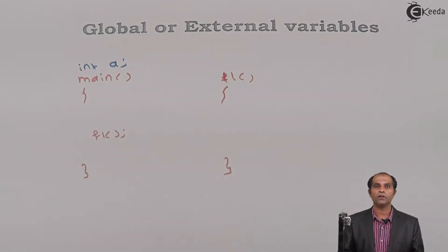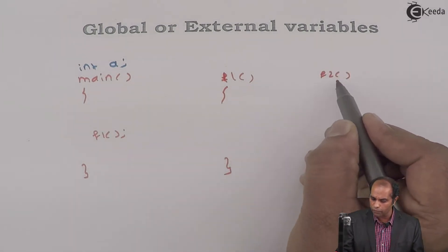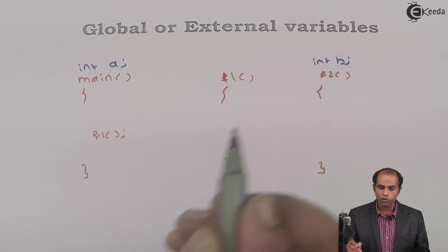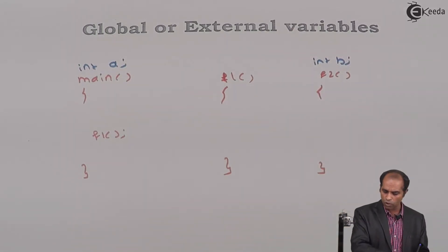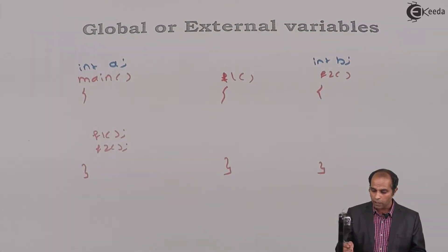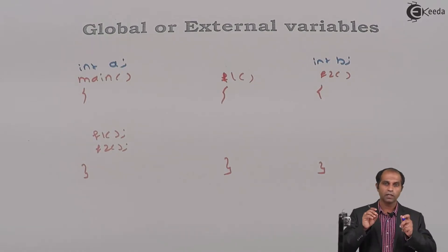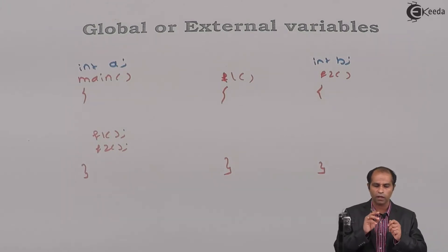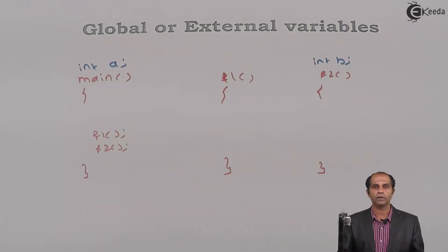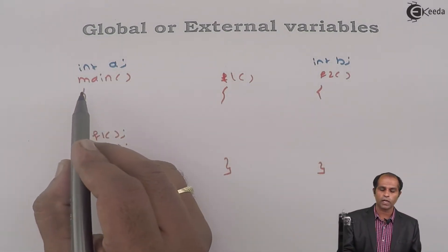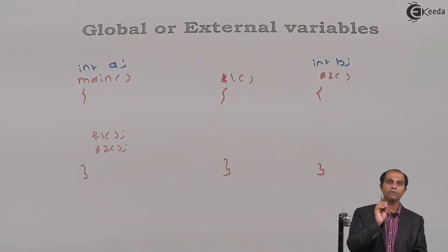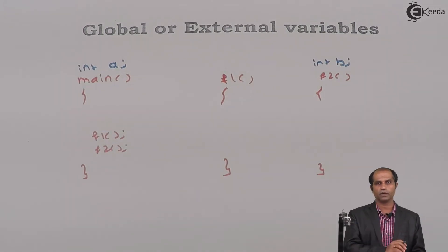This global variable a can be used in main as well as in f1. Suppose I declare int b above function f2, and f2 is called in main immediately after f1. Is b a global variable? Yes, b is also a global variable because its declaration never appears within a function. The life of such a variable always starts with the program and ends with the program — so a and b both start with main and end with main.